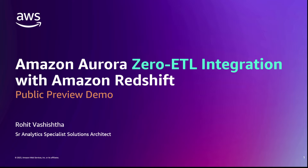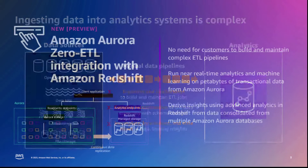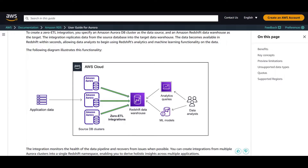One of the biggest challenges enterprises have had is in managing complex ETL pipelines wherein it's difficult to maintain, has multiple points of failure, and it's hard to keep them current and consistent. AWS introduced the Amazon Aurora Zero ETL integration with Amazon Redshift at re:Invent 2022. This feature gets transactional data of Aurora synced into Redshift with near real-time change data capture. You can replicate data from multiple Aurora databases into the same or new Redshift instance to derive holistic insights across multiple applications.